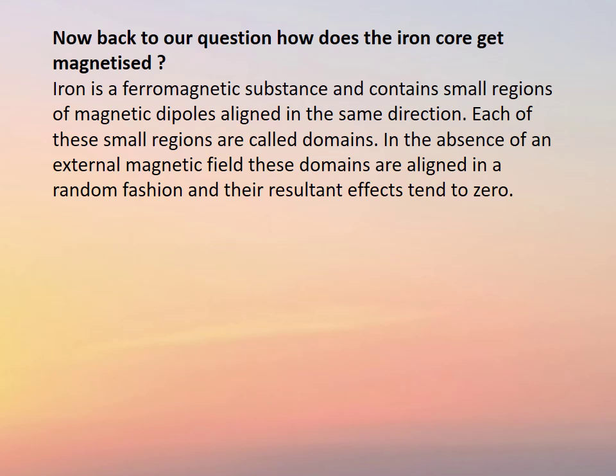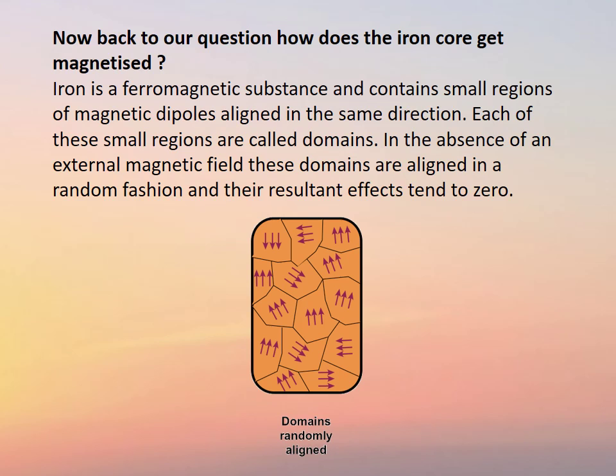Now back to our question: how does the iron core get magnetized? Iron is a ferromagnetic substance and contains small regions of magnetic dipoles aligned in the same direction. Each of these small regions are called domains.